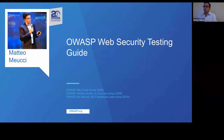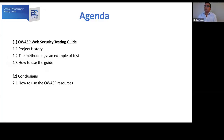Welcome to this talk on the OWASP Web Security Testing Guide. The talk will introduce the project history and methodology — now at version 4.2 — an example of a test, how to use the guide, and as a conclusion, how to use the OWASP resources together with the OWASP Testing Guide, because it is really important to have a 360-degree vision, not only focused on testing.